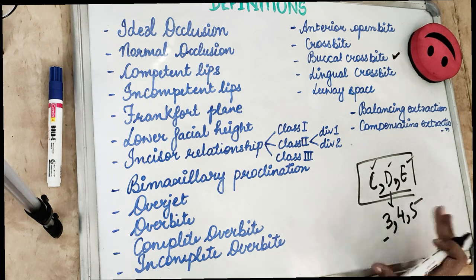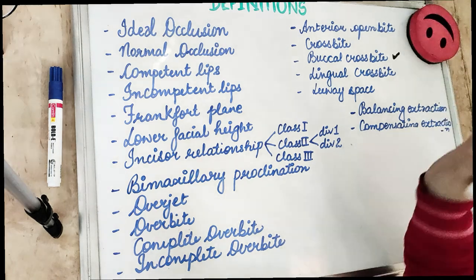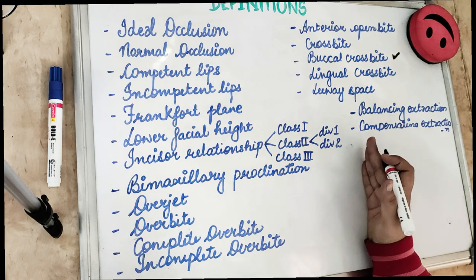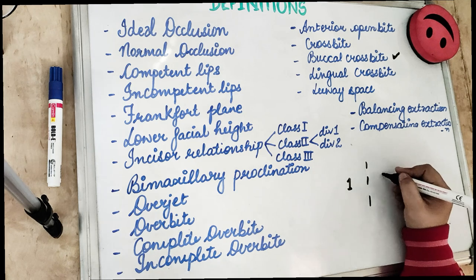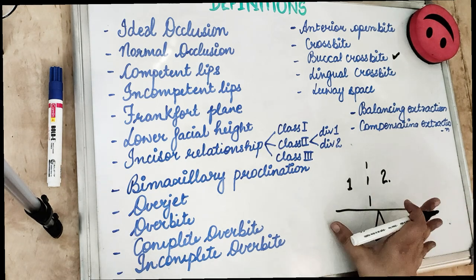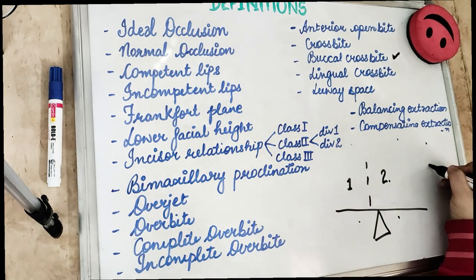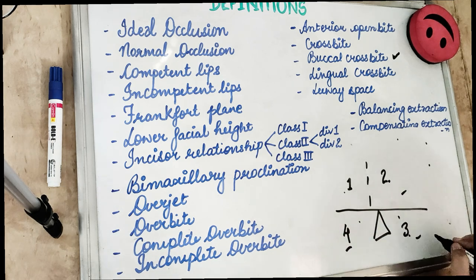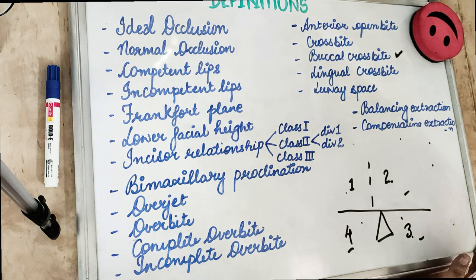Balancing extraction is extraction of the same tooth on the opposite side of the same arch. For example, if you extract the second premolar in the first quadrant, you also extract it from the second quadrant to maintain balance. Compensating extraction is when the same tooth is extracted on the opposite arch — for example, extracting the same tooth in the third and fourth quadrants.